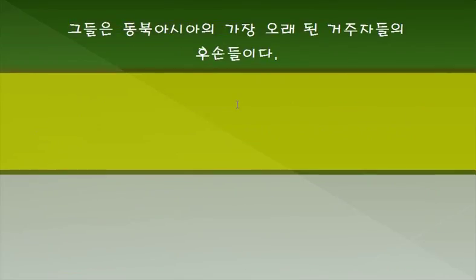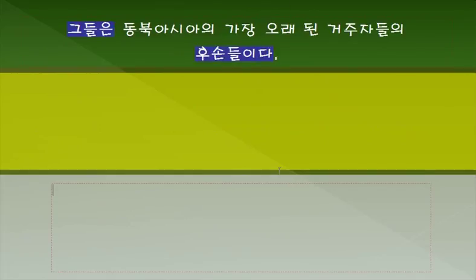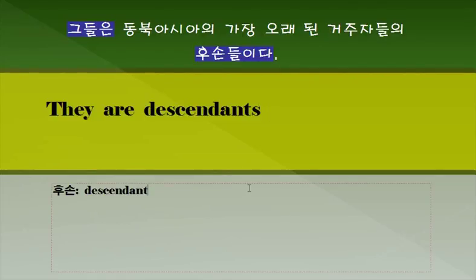두 번째 문장입니다. 그들은 동북아시아의 가장 오래된 거주자들의 후손들이다. 그들은 후손들이다. 후손이라는 단어를 확인해 둬야 되겠죠. 후손—'descendant'. 좀 어려운 단어입니다. 바로 이 단어를 쓰면 됩니다. 그들은 후손들이다—복수형으로 써져야 되겠죠. 'Descendants'. 누구의 후손들입니까? 거주자들의 후손들입니다. 거주자라는 표현도 확인해야 되겠죠.